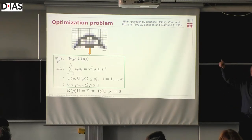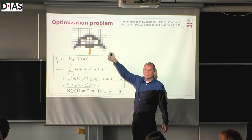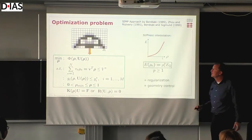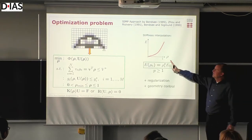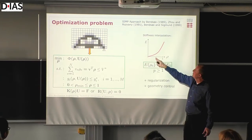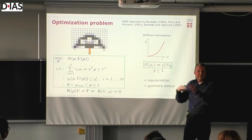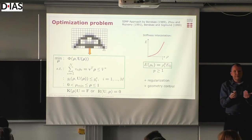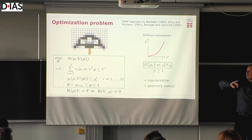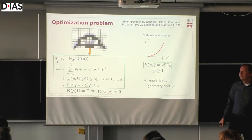I introduce these continuous variables, which means when we start optimizing we could end up in structures that have a lot of gray spongy material. If we want to get rid of that, we can do different tricks. If we take the stiffness as a function of the density variable and say intermediate values have proportionally low stiffness, then the optimizer doesn't like to use gray material — it would prefer to use either solid or void. In that way, even though we solve a continuous problem, we end up in a discrete solution very efficiently.